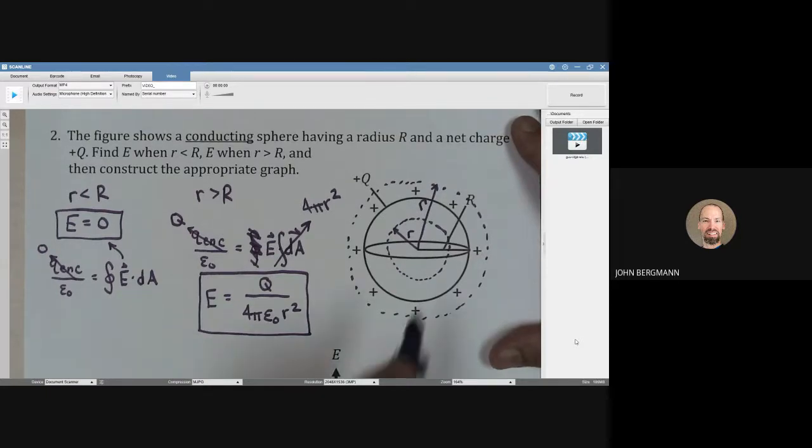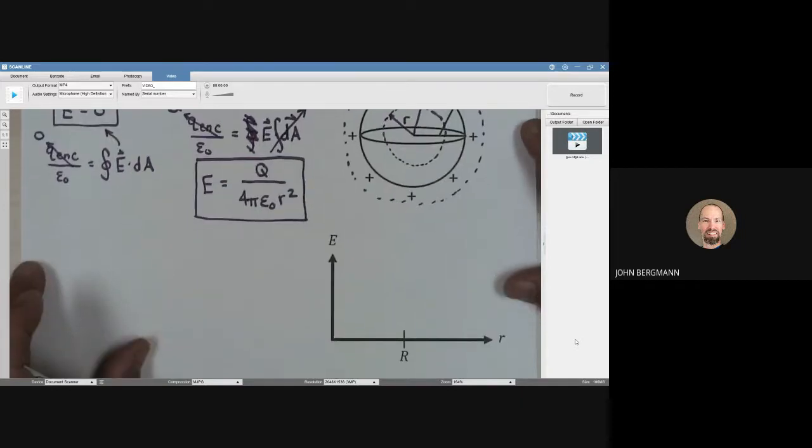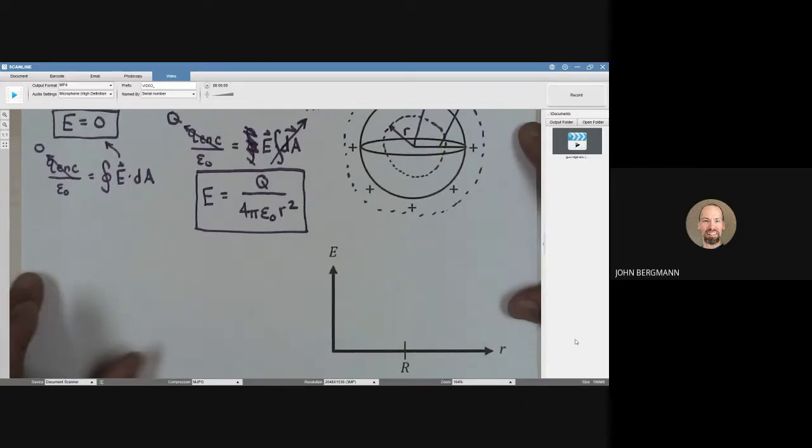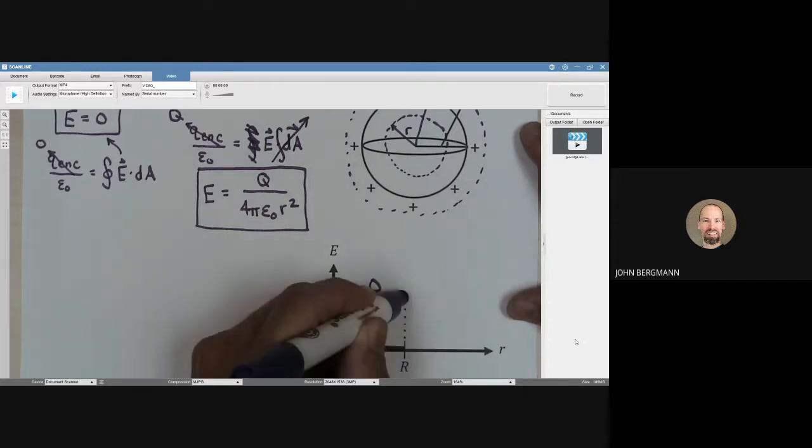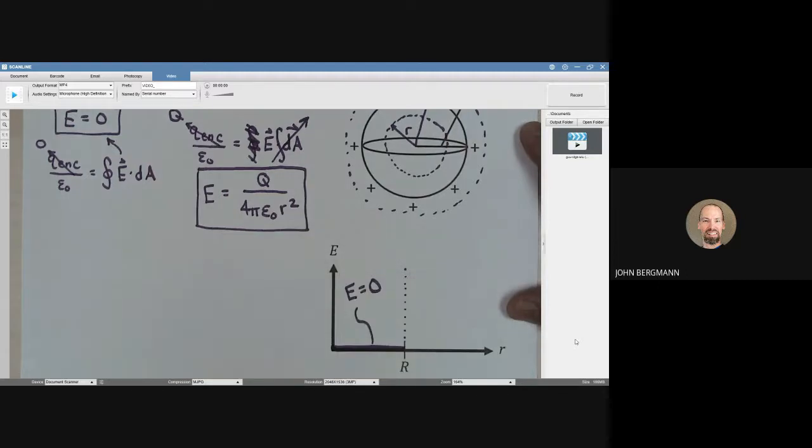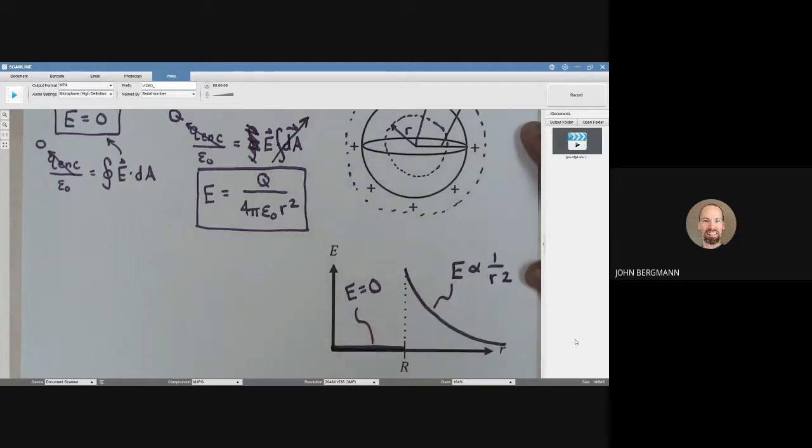Outside this cannonball, it is as if all of the charge is at a point. If we're going to draw a graph for this, the electric field within r is zero. And then the graph falls away according to 1 over r squared, according to the equation that we've just derived here. So E is proportional to 1 over r squared.